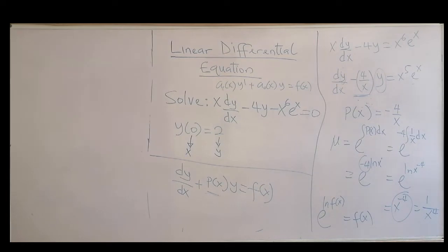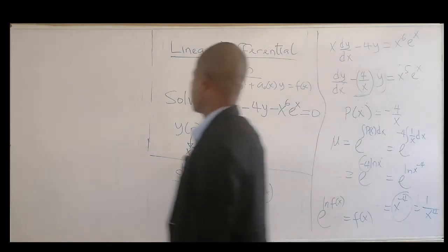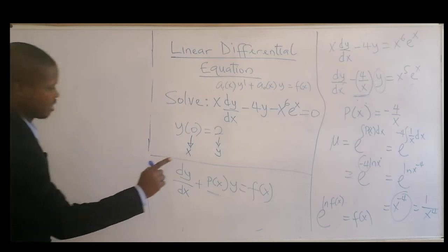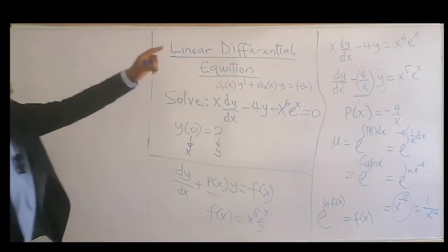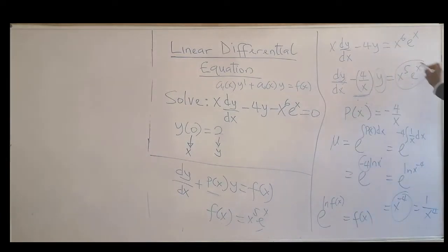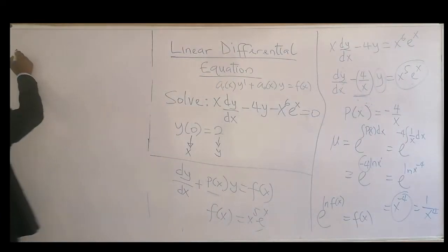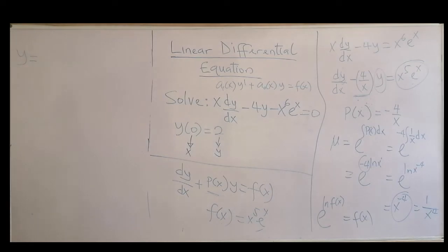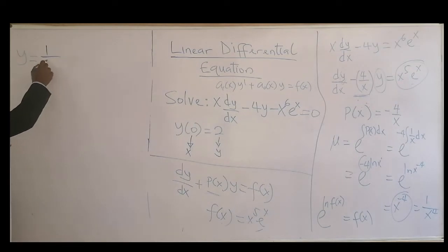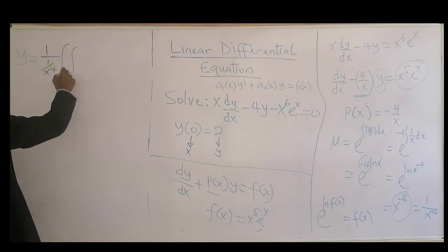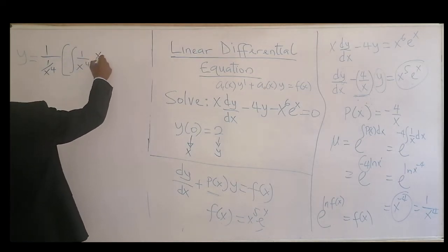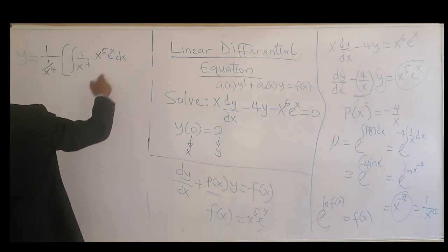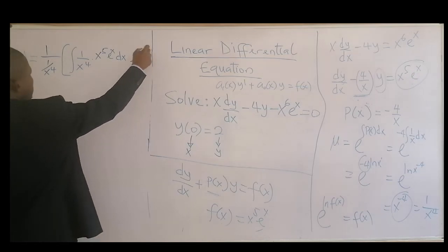We've found the integrating factor. Also, f(x) in this equation is x⁵eˣ. The general solution is y = (1/μ) ∫[μ · f(x)] dx + c, which becomes y = x⁴ · ∫[(1/x⁴) · x⁵eˣ] dx + c, giving us x⁴ · ∫[xeˣ] dx + c.